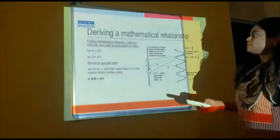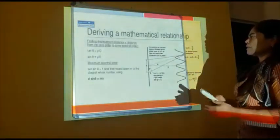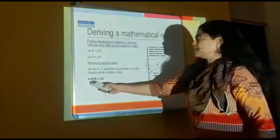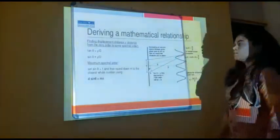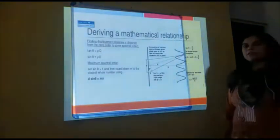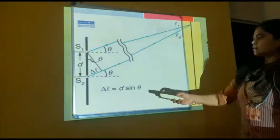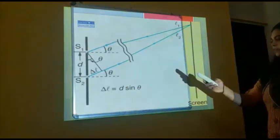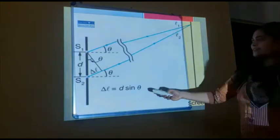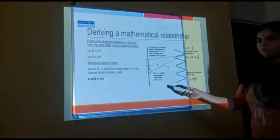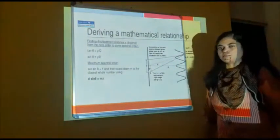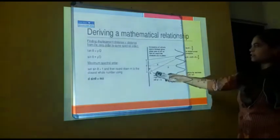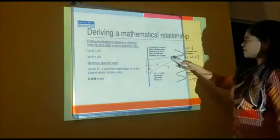We will see mathematically what D sin theta actually is. D sin theta is the path difference, delta L. In the previous derivation we observed this is the path difference — delta L is nothing but D sin theta. And if it is a wave, it should be expressed as lambda. So what is the path difference between these two? It is the same thing here.